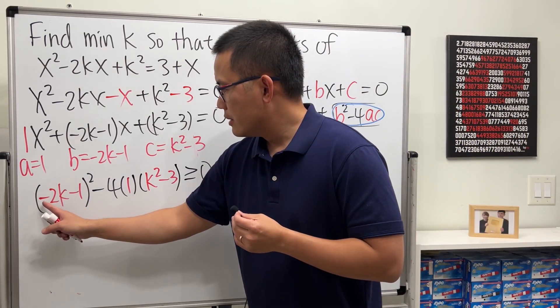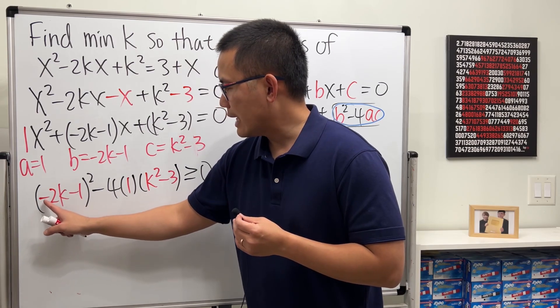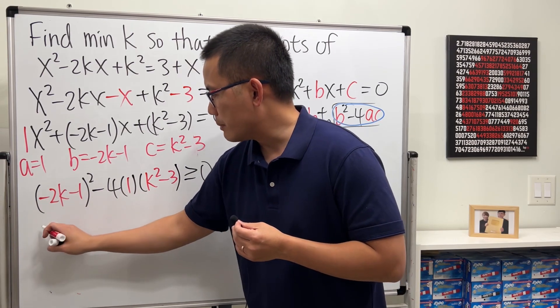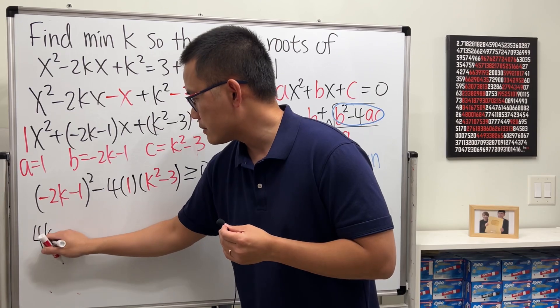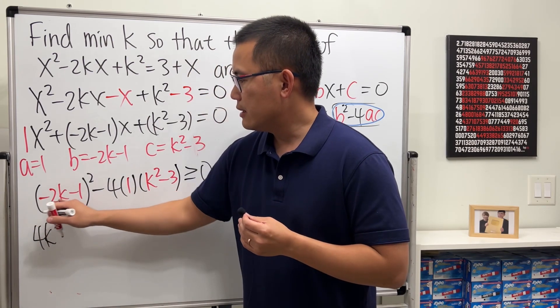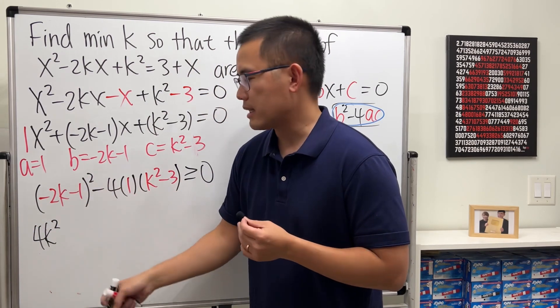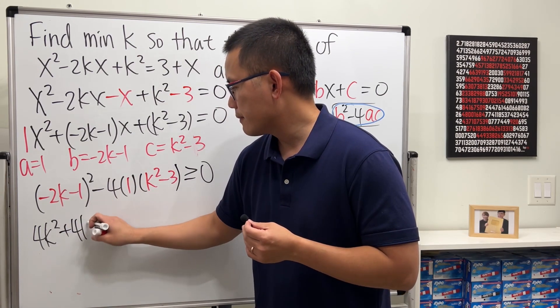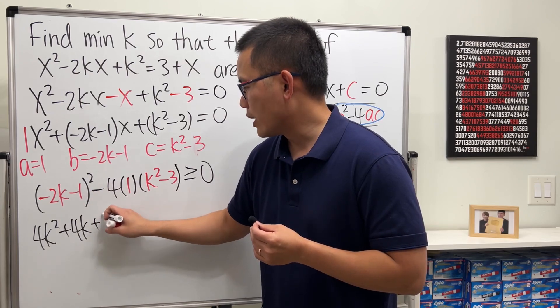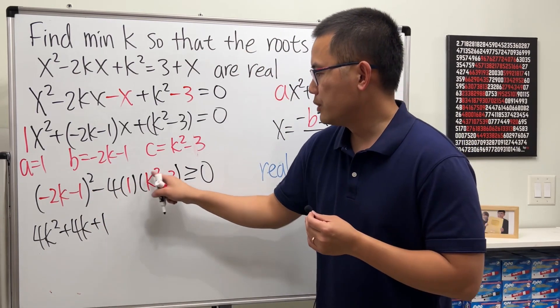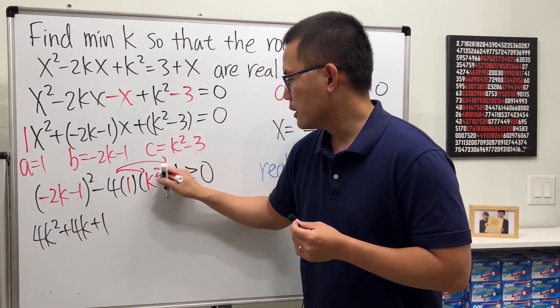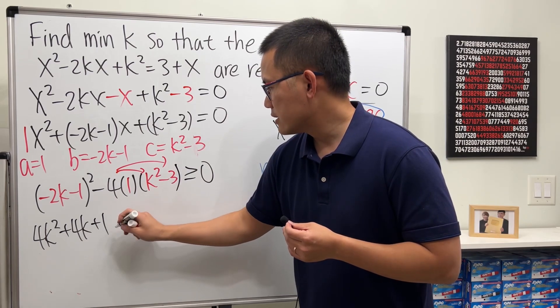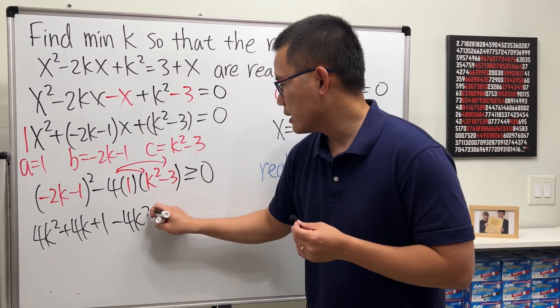Have a look. To expand this we will just have to square this term, we will get positive 4k². And then it's negative, but if you square that you get positive, so it's plus 2 times this and that, you get 4k, and then plus 1. And then distribute the negative 4, you get minus 4k² and then plus 12, greater than or equal to zero.